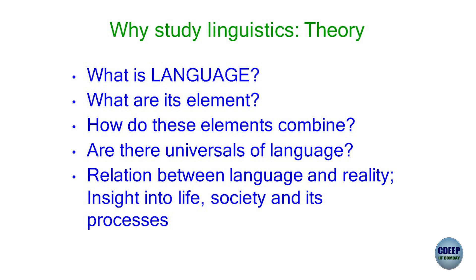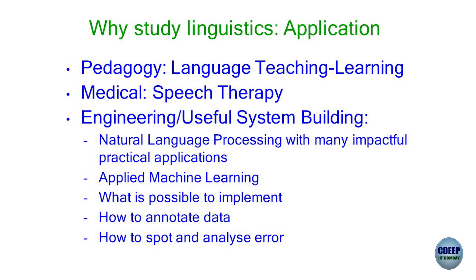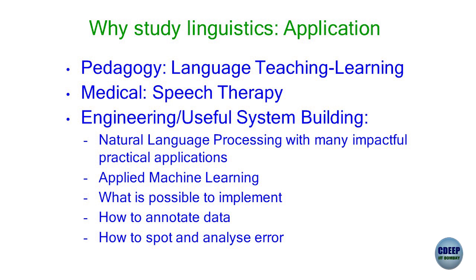The theory of linguistics is concerned with what language is, what its elements are, how these elements combine, whether there are universals of language, and the relation between language and reality. Language is a huge algorithmic system — a huge computing system in our mind — and the computation of language is manipulation of symbols. Applications of linguistics include pedagogy and language teaching, speech therapy in the medical domain, and in engineering: natural language processing with many impactful applications. Machine learning researchers call NLP 'applied machine learning.' What is possible to implement, how to annotate data, and how to spot and analyze error — these are the applications of linguistics in engineering.